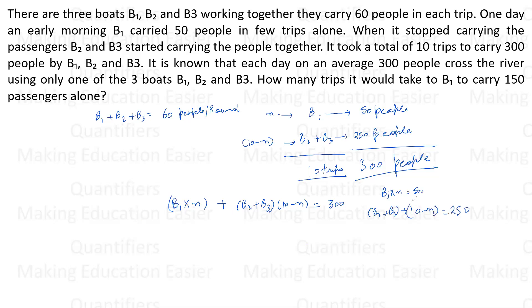Now see what is the advantage when I write it like this. From here, B1 is equal to 50 by N. From here, B2 plus B3 is equal to 250 by 10 minus N. Where N is an integer. So let me now write it as B1 is 50 by N. B2 plus B3 is 250 by 10 minus N. And this is equal to 60.